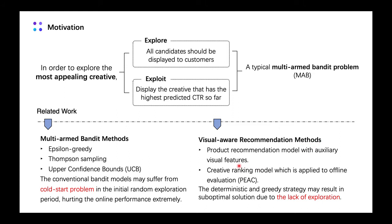The other type of methods are visual-aware recommendation models. They consider the visual features extracted by CNN models and make deterministic selections. These deep models are computationally heavy and cannot be flexibly updated on time. Besides, the deterministic greedy strategy may result in suboptimal solutions due to the lack of exploration. Consequently, how to combine both the expressive visual representations and the flexible bandit model remains a challenging problem.